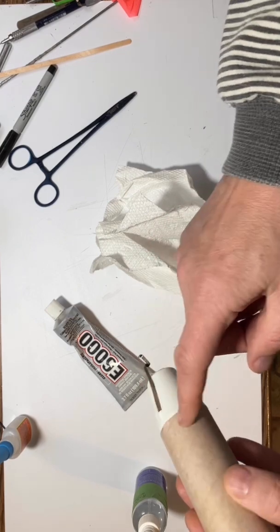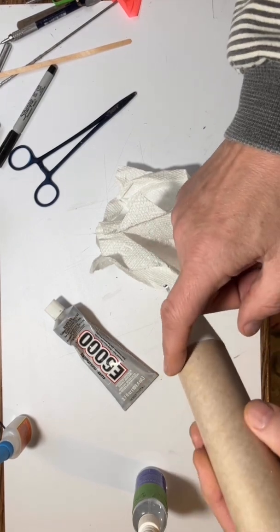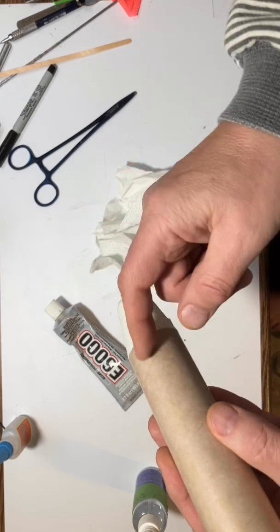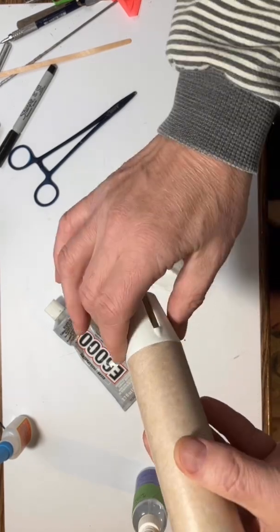We also have the E6000 glue around the inside of this tube here, so when we pushed the tail cone on, that's now pushed into a nice wad of glue as well.